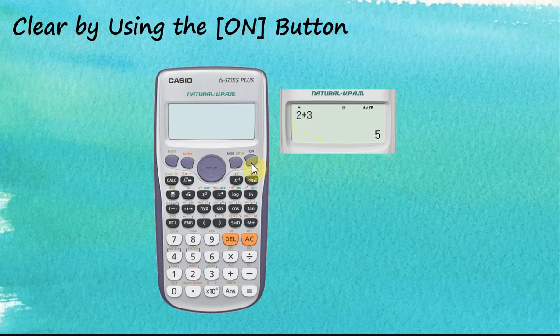Now if we tap on this ON button, the screen will be clear and the history also will be clear. If we tap on this up arrow key and check, you will find that the history is no longer there. So that's the difference between the ON button and all clear button. The all clear button just clears the screen but the ON button clears the screen and the history of the calculation.